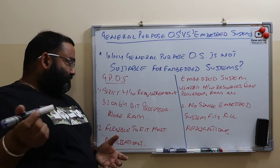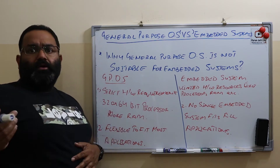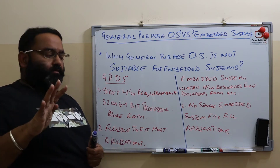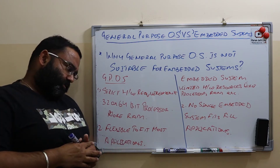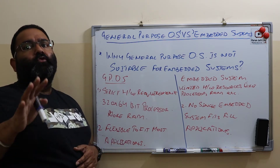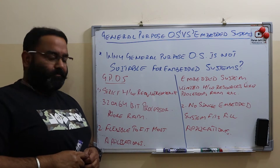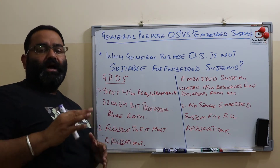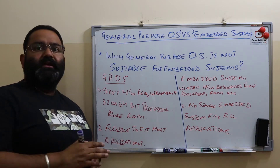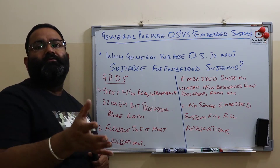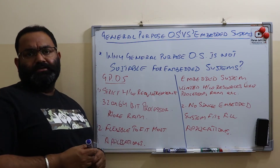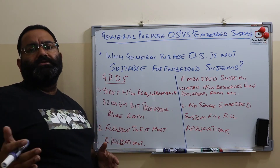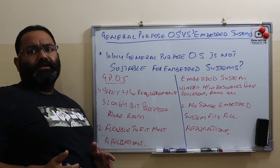General purpose operating systems also need more RAM — at least 4 gigabytes of RAM. Most general purpose operating systems are designed to be suitable for the majority of applications, and they can run most applications without any modifications.